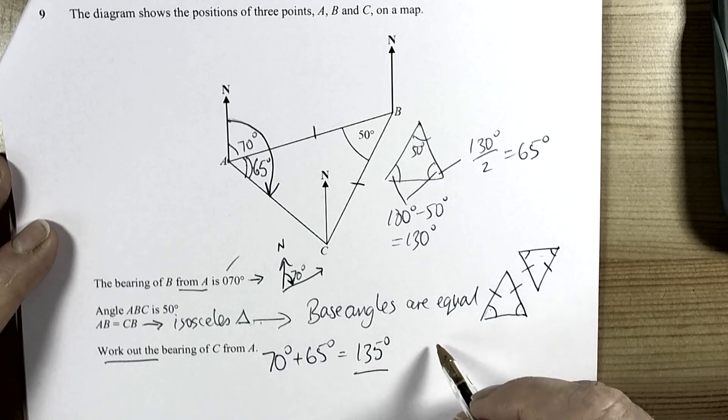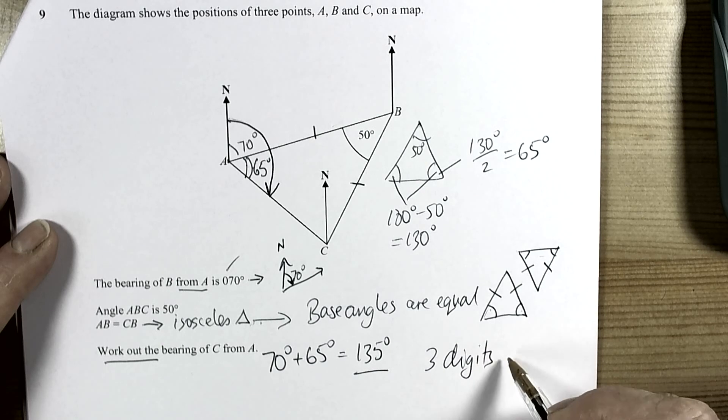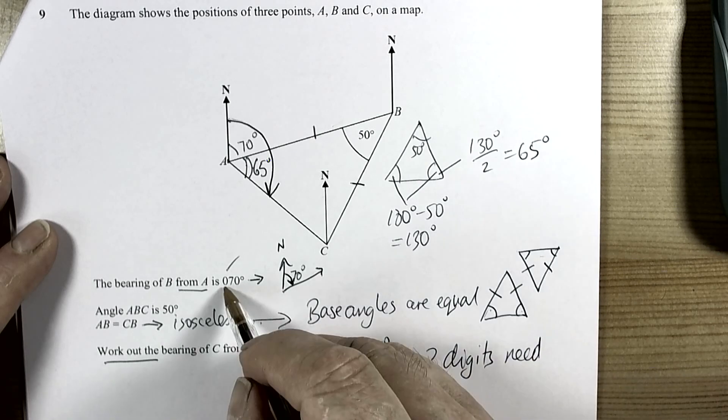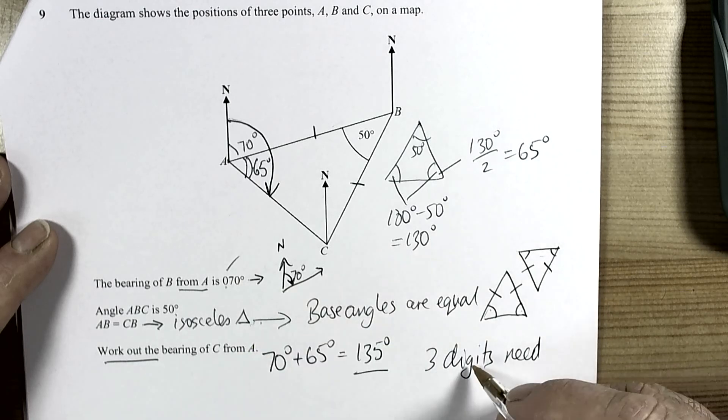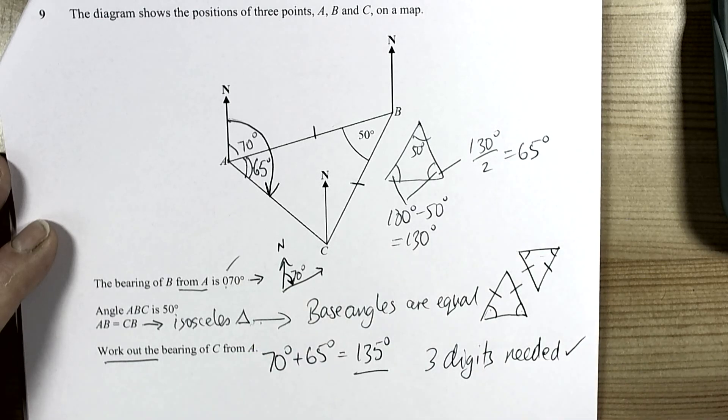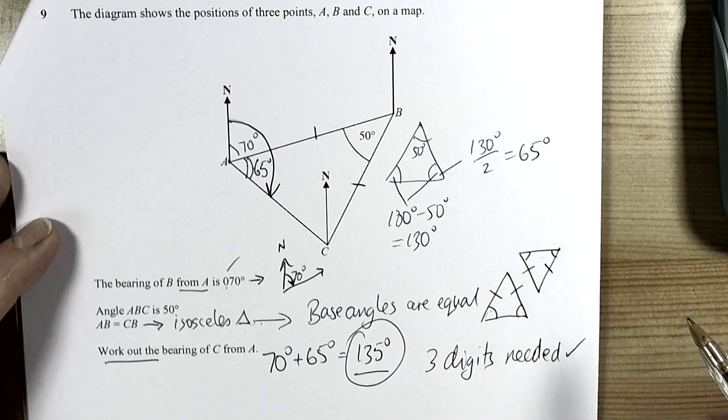It's already three digits because bearings must have three digits. Hence the reason that this one had a zero at the front because three digits zero seven zero. Three digits needed. We've made that condition 135. So our answer then is 135 degrees.